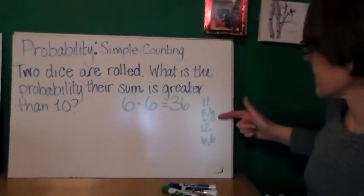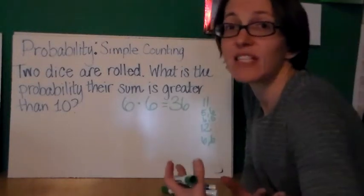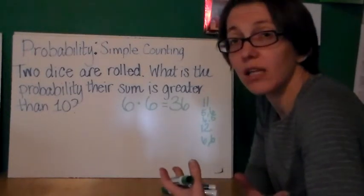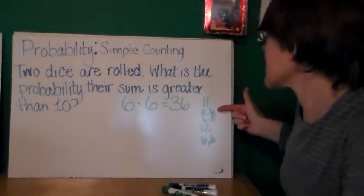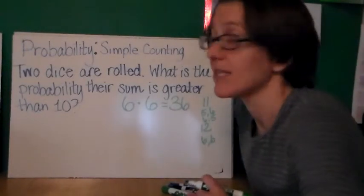Five and six, six and five, or six and six. And again, I think it's helpful to think of the dice as being like two different colors because then you can see that this five, six is a different outcome from six, five.